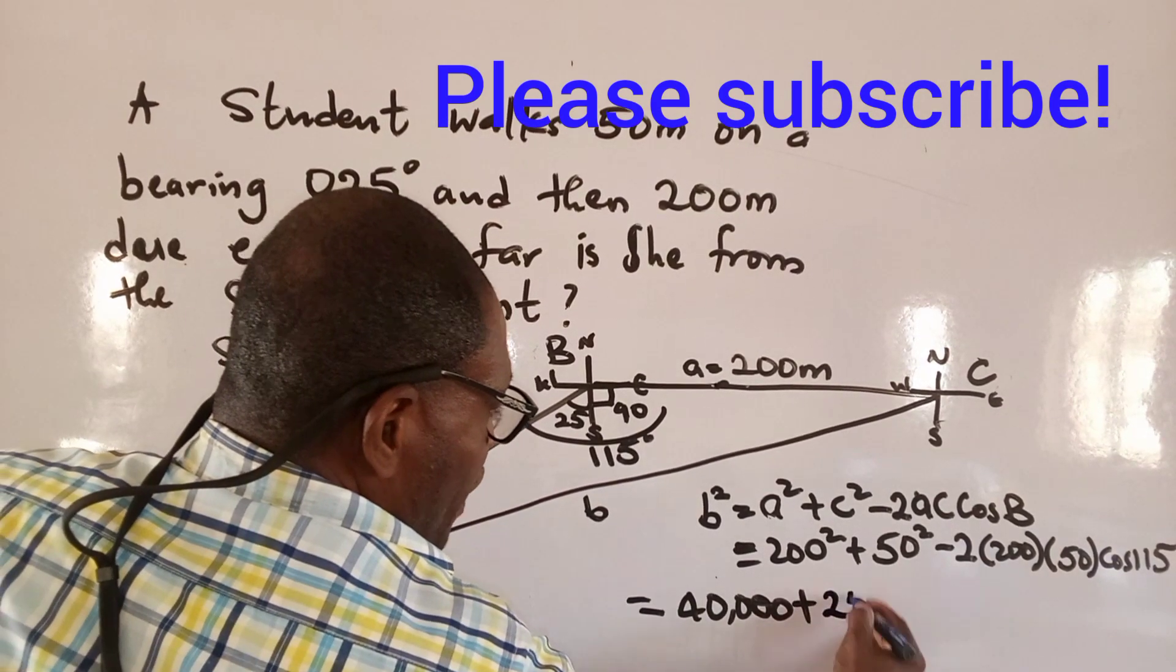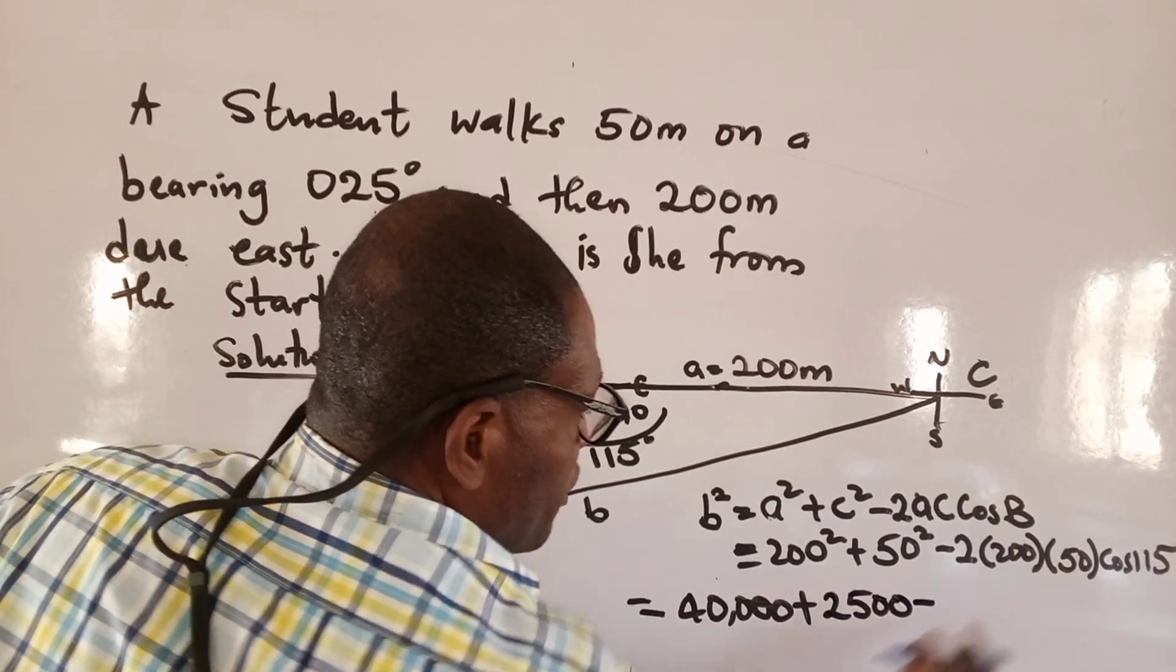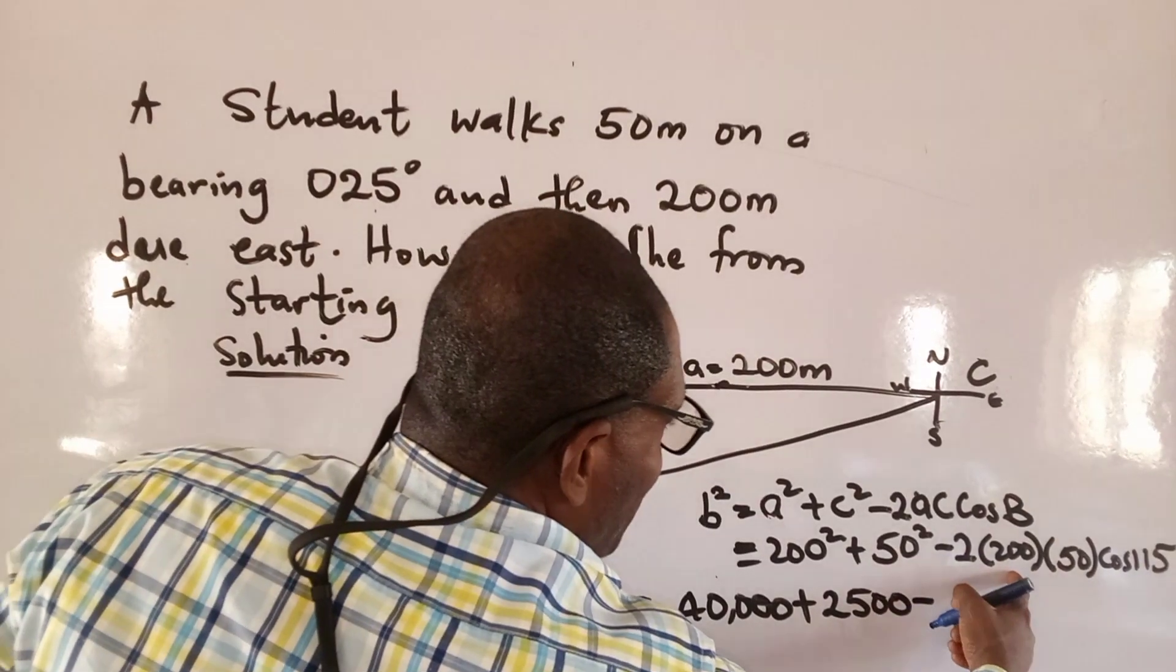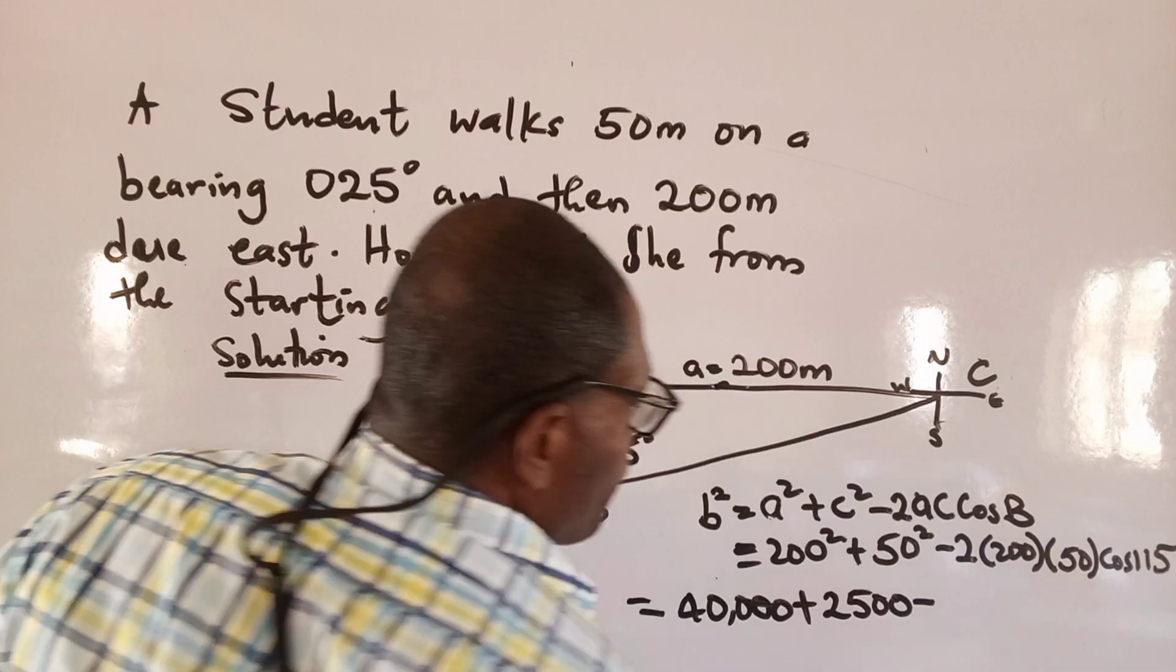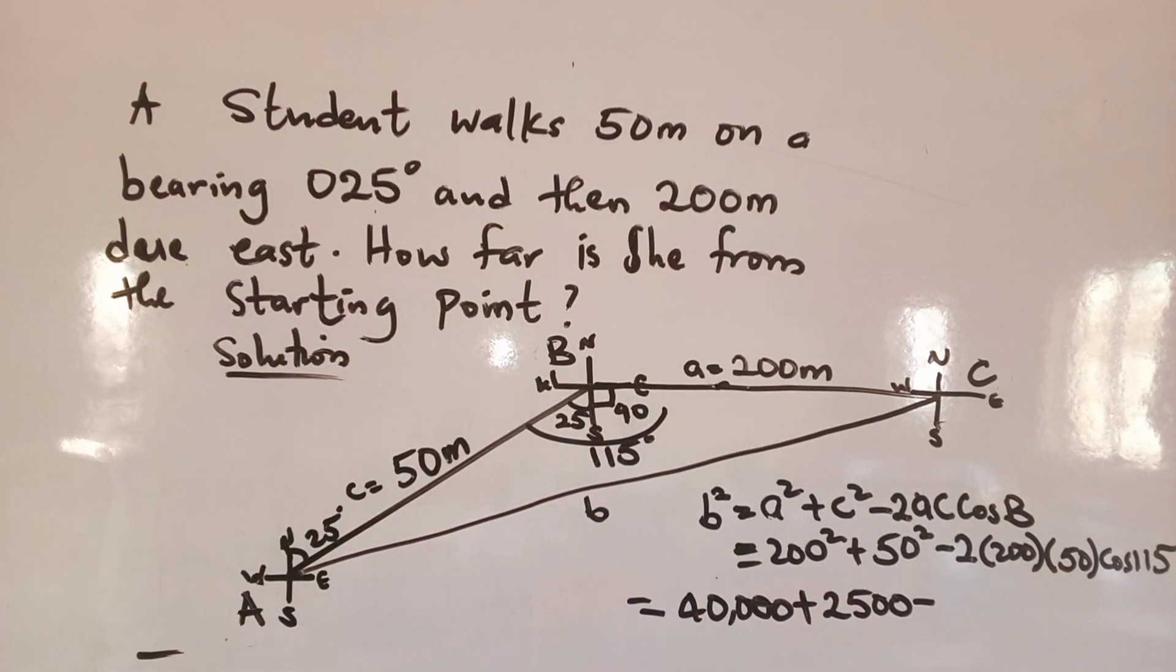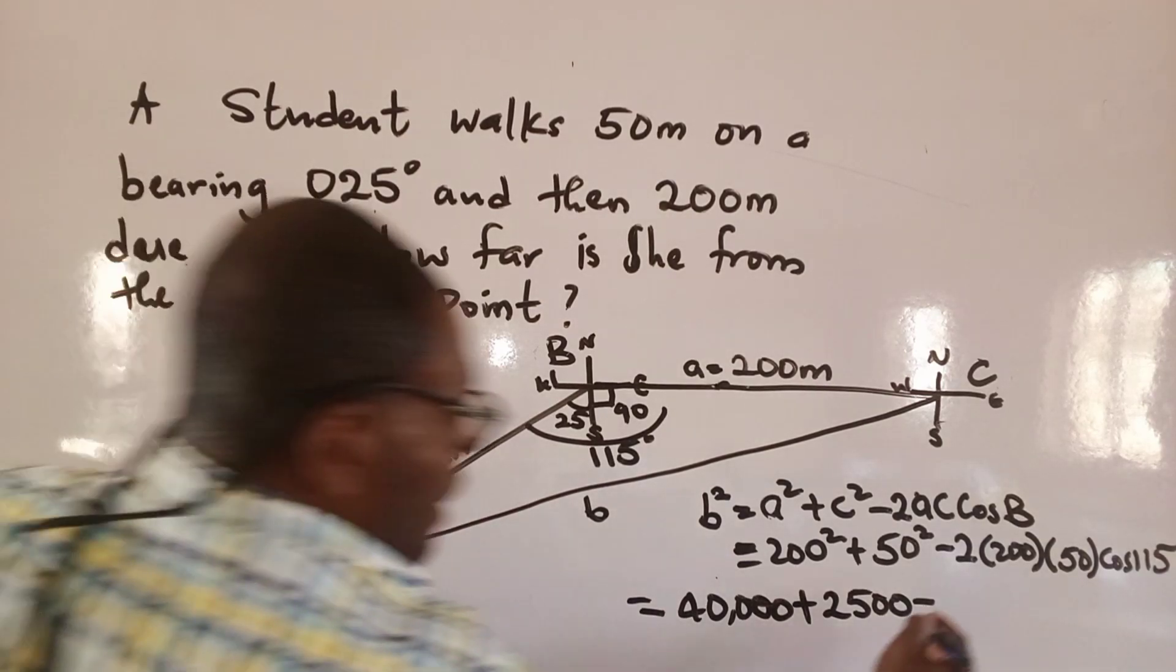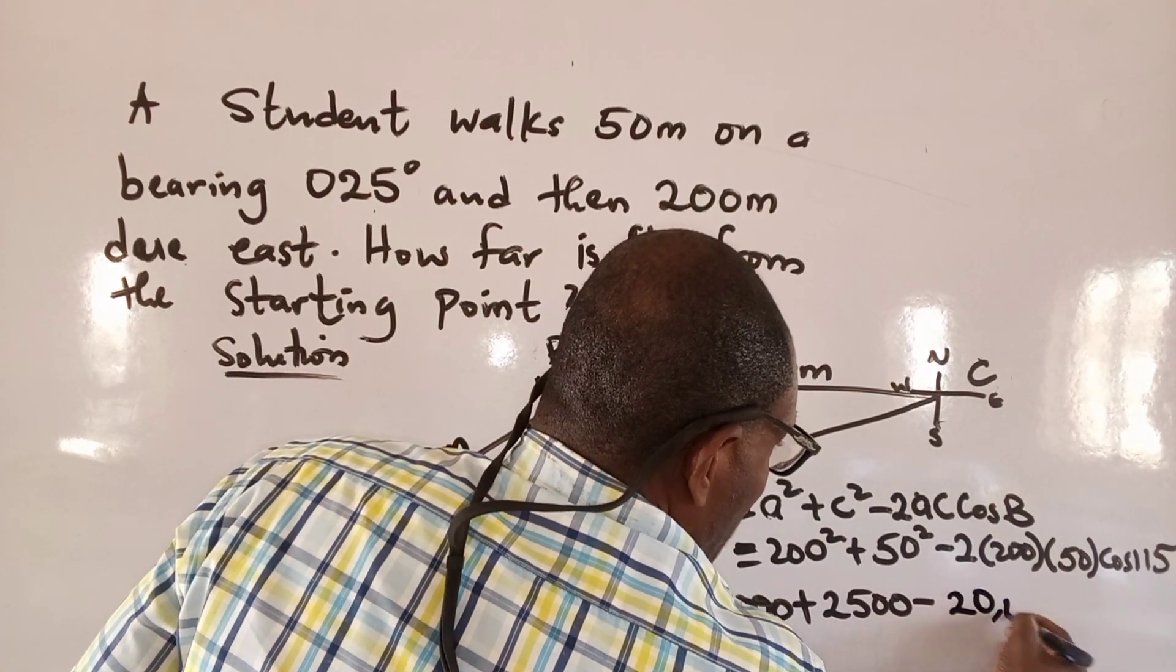Minus, multiply the whole of this. What is it? 200 times 50 times 2, what would that give me? 200 times 50 is 10,000. 10,000 times 2 is 20,000.